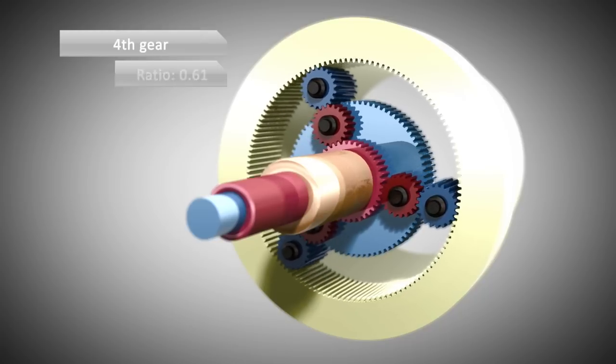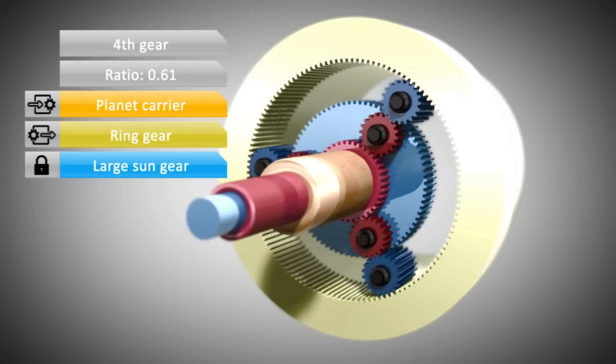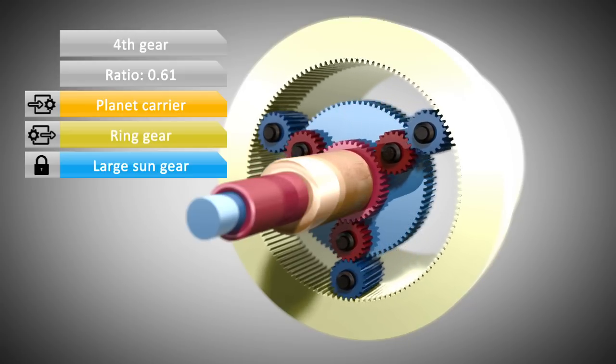In fourth gear, the planet carrier is the input. The large sun is held stationary and, again, the ring gear drives the wheels of the car.